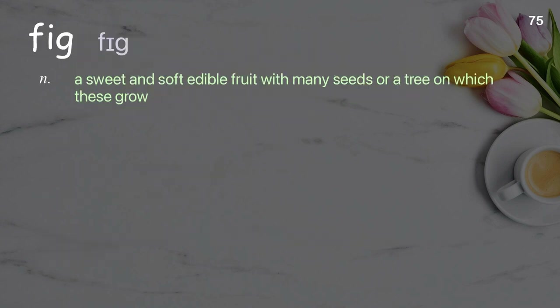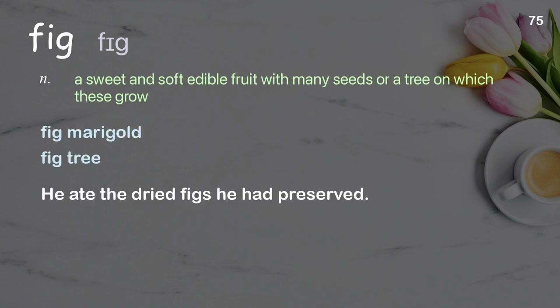Fig: a sweet and soft edible fruit with many seeds, or a tree on which these grow. Examples: Fig marigold. Fig tree. He ate the dried figs he had preserved.